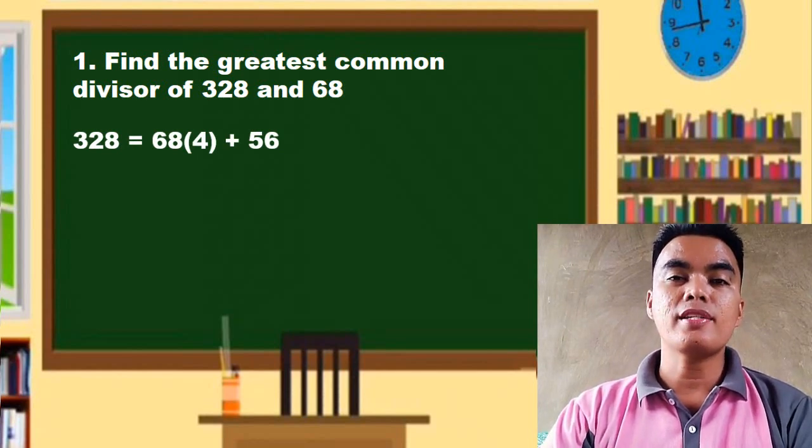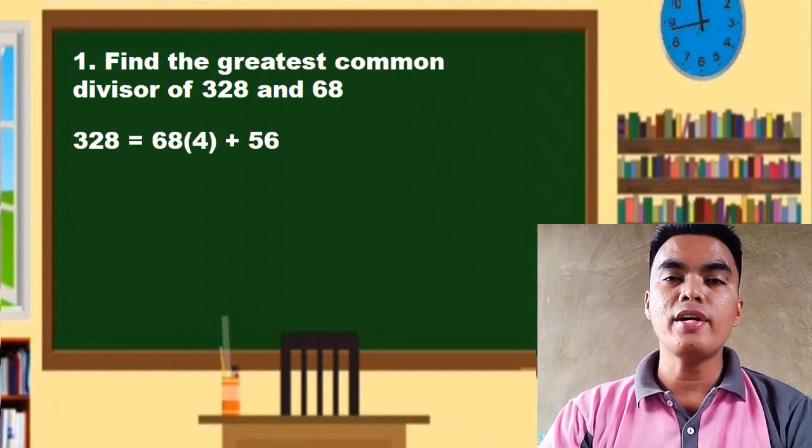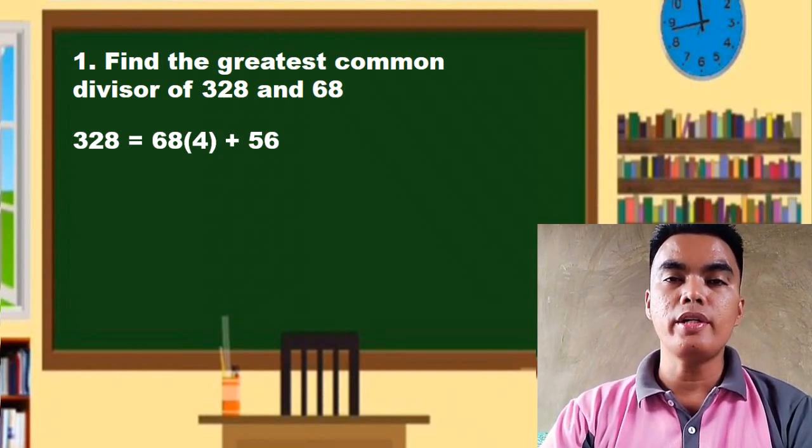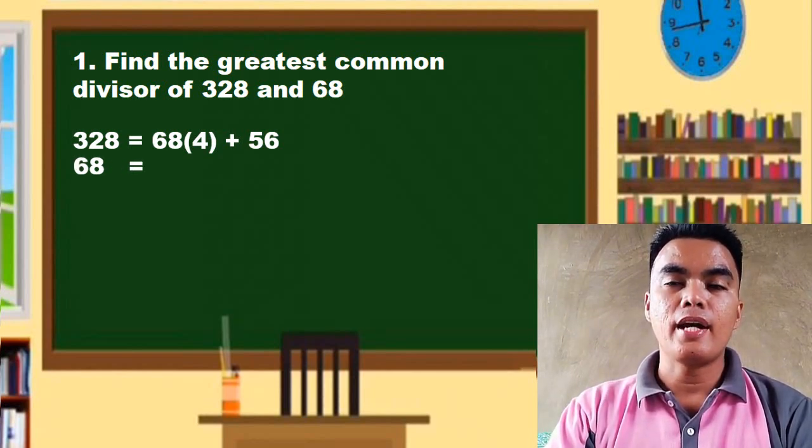times 4 plus 56. So what you're going to do is find a number which, if multiplied to the smaller number and added to r, will be equal to the larger number. Now we have 68 and that is equal to...